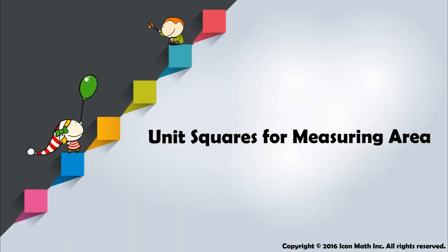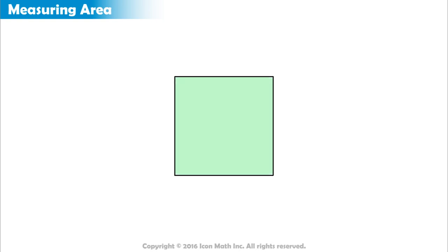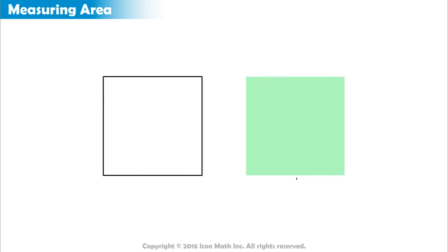Unit squares for measuring area. Let's say we have this square. It takes some space because it has size. The shaded region shows the space the square takes up.